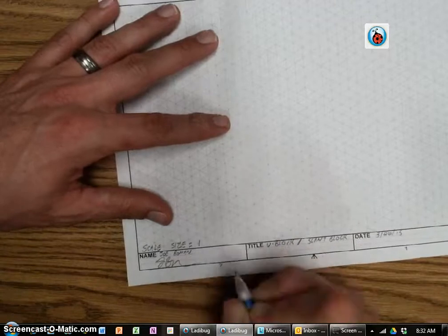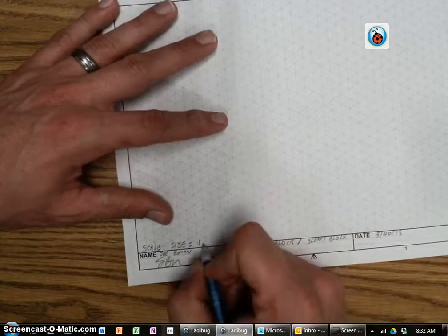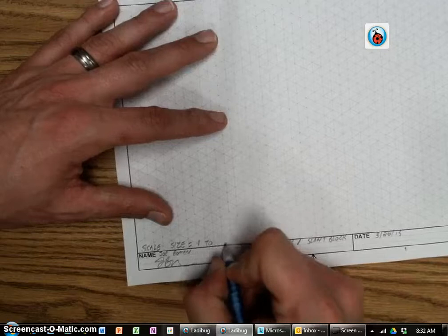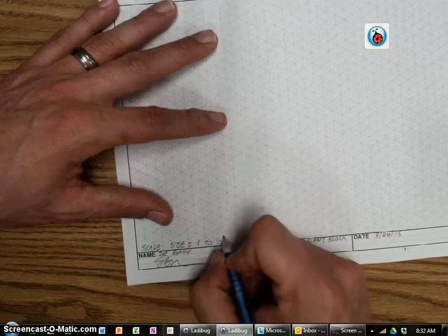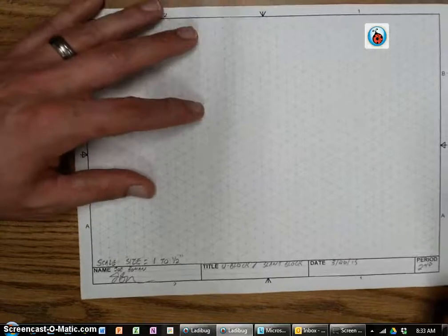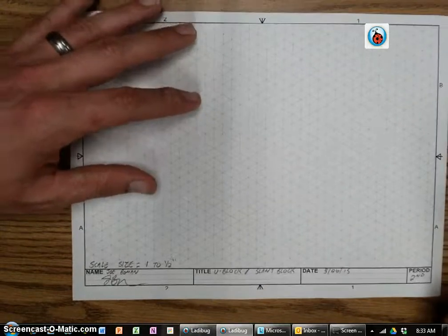Remember, it goes blocks to inches. We're going to do that same scale size, 1, the word TO, fraction of 1 over 2, which is half inch. Scale size is 1 to half inch.